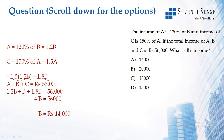We know that A plus B plus C is equal to Rs. 56,000. The value of A is 1.2B, B is as it is, and C is 1.8B. When you simplify, that gives 4B is equal to 56,000.